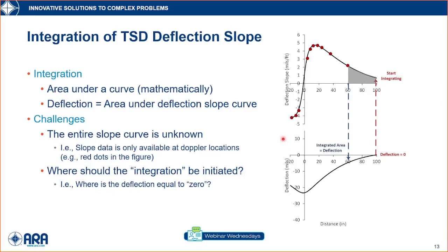Integration mathematically means calculating the area under a given curve. In our case, the deflection is the area under the deflection slope curve. The challenge is that we only have a limited number of sensors and do not know what happens beyond the sensor locations. Ideally, you would want to know where the deflection is equal to zero — that's where you start integrating to calculate the area and work your way to get peak deflections below the axle.